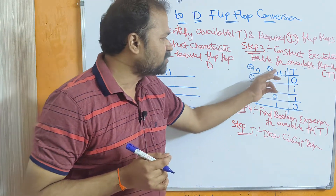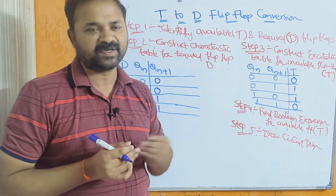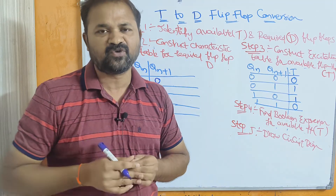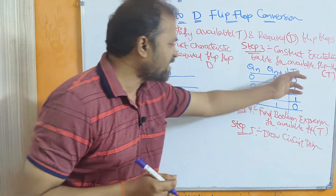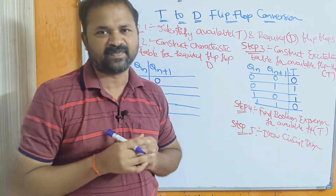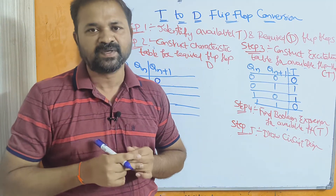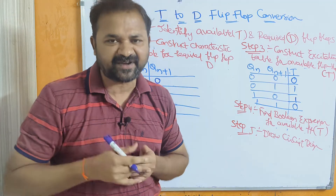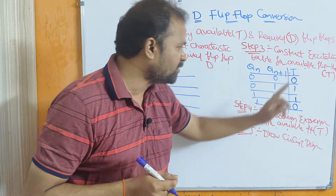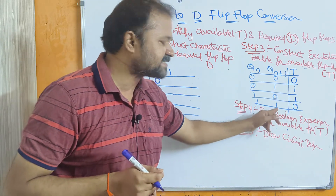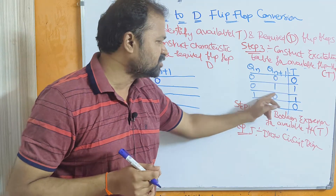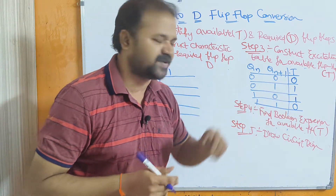For the T flip-flop excitation table, the inputs are Qn and Qn+1, whereas the output is T. We have 2 inputs, so totally 4 combinations. The value of T is simple: if the inputs are the same, then the output is 0; whereas if the inputs are different, then the output is 1. So for 0,0 — same inputs, output is 0. For 1,1 — same inputs, output is 0. For 0,1 and 1,0 — inputs are different, so output is 1.